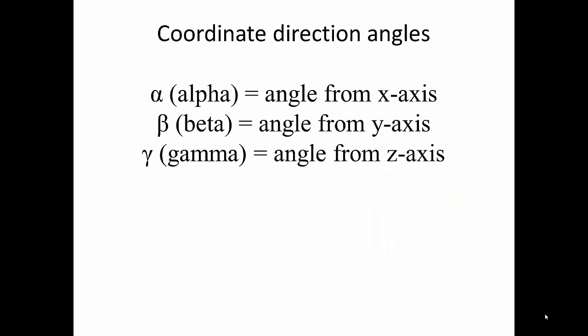When dealing with vectors in three dimensions, it's important to understand coordinate direction angles. Alpha is the angle from the x axis, beta is the angle from the y axis, and gamma is the angle from the z axis.